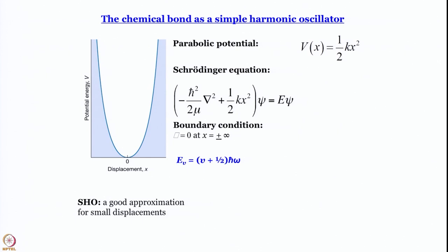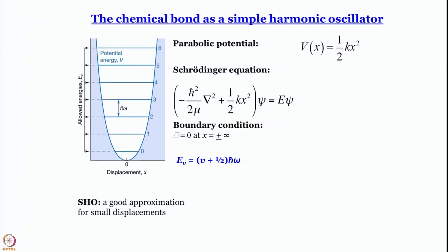When we work it out, we will see that energy is quantized: E_v = (v + ½)ℏω, where ω is the angular frequency of oscillation and v is the vibrational quantum number ranging from 0, 1, 2, 3... We get discrete energy levels, and they are equispaced — the energy gap between two successive levels is always ℏω, which is one quantum of vibrational energy.